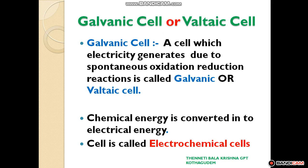A cell which generates electricity due to spontaneous oxidation-reduction reaction is called a galvanic cell or voltaic cell. In this cell, the chemical energy is converted to electrical energy. So the cell which converts chemical energy into electrical energy is called an electrochemical cell. This cell is called a galvanic cell, voltaic cell, or electrochemical cell.